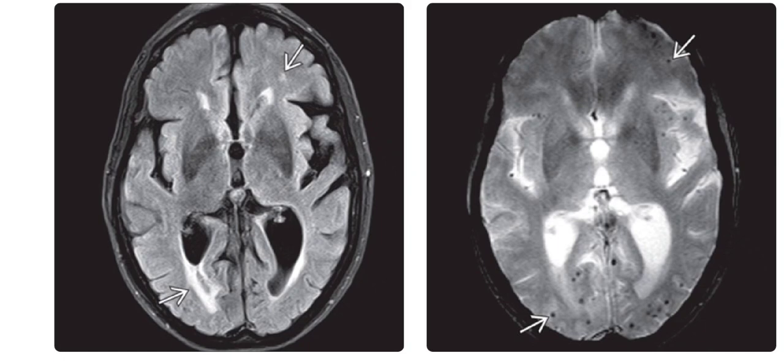The left is an axial FLAIR MRI sequence showing mild periventricular and subcortical white matter hyperintensity related to arteriolosclerosis in a 51-year-old woman with cerebral amyloid angiopathy. The right is the axial GRE sequence showing the typical peripheral distribution of hypointensity or blooming related to susceptibility artifact from blood products in the cortex and subcortical white matter. Also noted is that the deep gray nuclei are relatively spared.